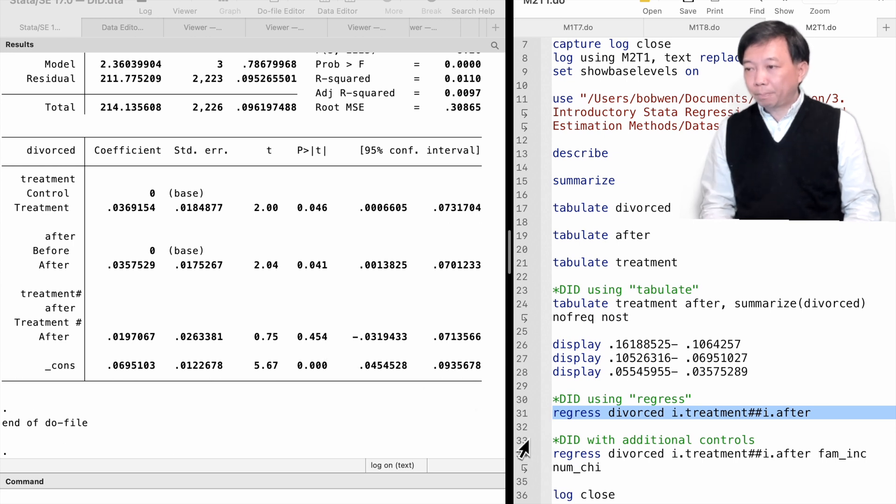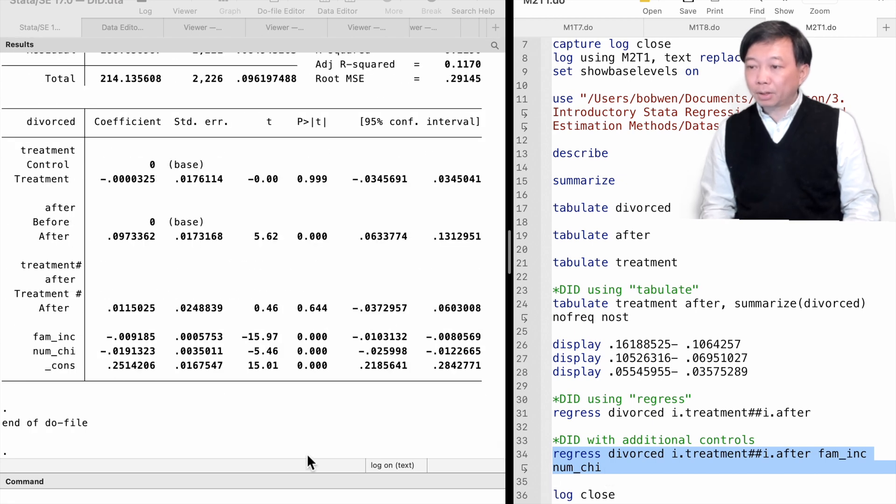If we are worried about the parallel trend assumption, we could add control variables to the model. For example, the family income and the number of children could affect the divorce decision. We can add them as control variables. The result shows that more children or higher annual family income reduced divorce. The average treatment effect of the no-fault divorce law drops to 1.2 percentage points. It is still not statistically significant at any reasonable level.